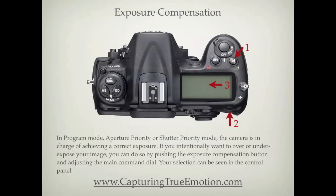In program mode, aperture priority, or shutter priority mode, the camera is in charge of a correct exposure. If you intentionally want to over or under expose your image, you can do so by pushing the exposure compensation button and adjusting the main command dial. Your selection can be seen in the control panel.